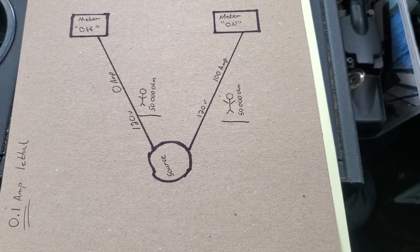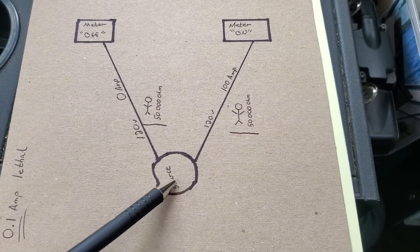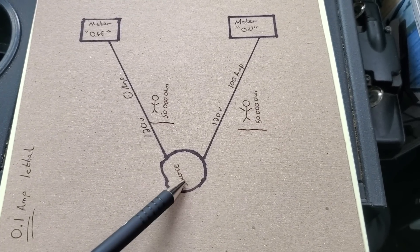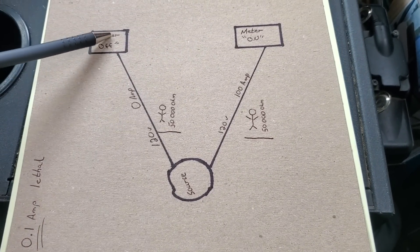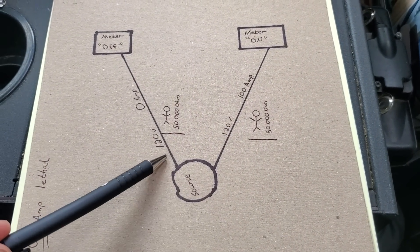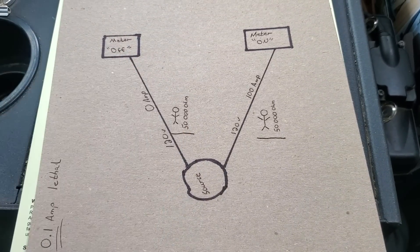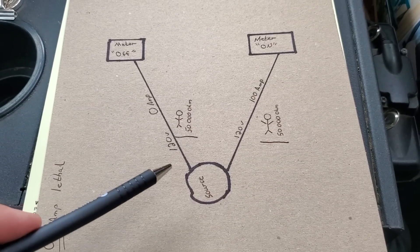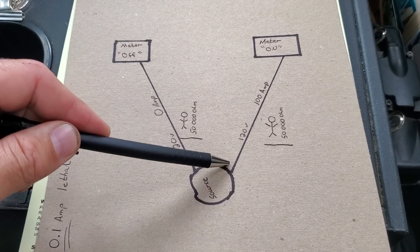So I just did up a quick super simple drawing here where let's say we got the source, this is the transformer, the pole, the generating station, whatever you want to consider it. And let's say we've got two houses. Now each house is being fed by 120 volts triplex. It's actually 120-240 but just for the purpose of explaining in this video we've got triplex, it's got 120 volts feeding one home and 120 volts feeding the other home.